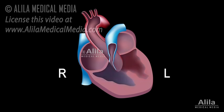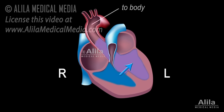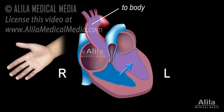On the other hand, when pulmonary stenosis is severe, blood in the right ventricle has to escape through the septal defect during ventricular contraction, and a right-to-left shunt results. The mixed blood, which is low in oxygen, is then pumped into the aorta and to the body, causing oxygen deprivation in the body's tissues, or hypoxia. This may result in a bluish skin color, known as cyanosis.